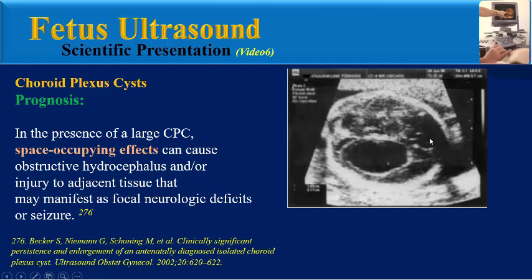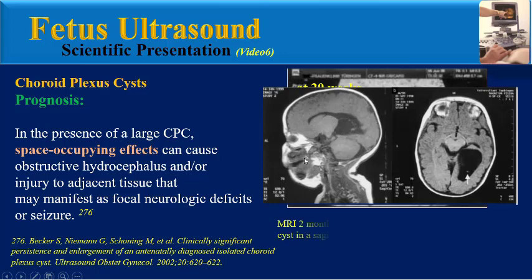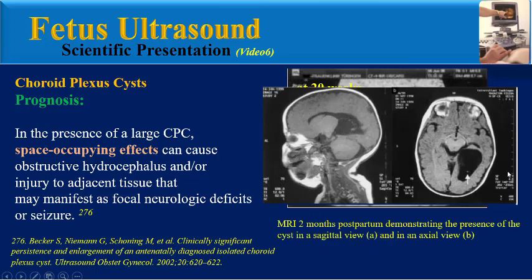This image shows large choroid plexus cysts at 20 weeks. And this brain MRI, two months postpartum, demonstrates the presence of large cysts causing mass effects on adjacent brain parenchyma and ventricles.